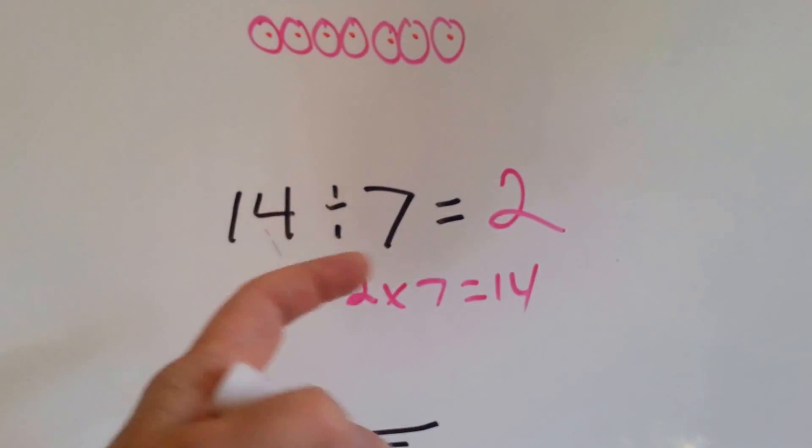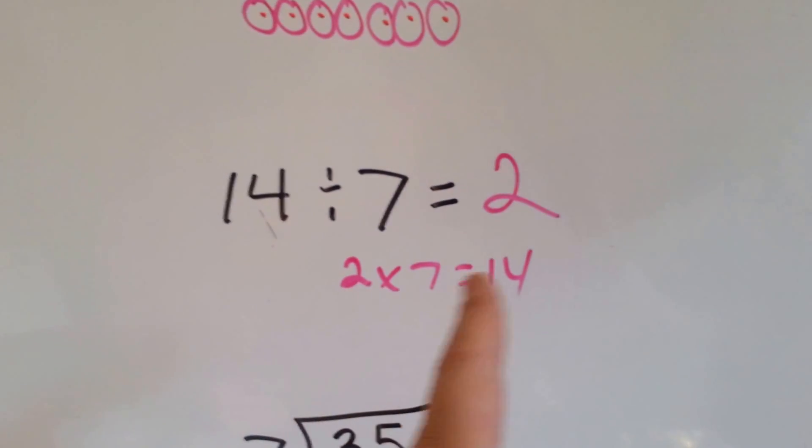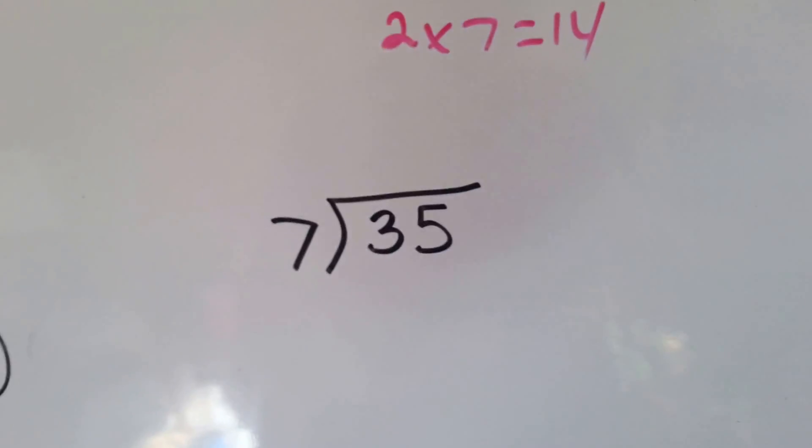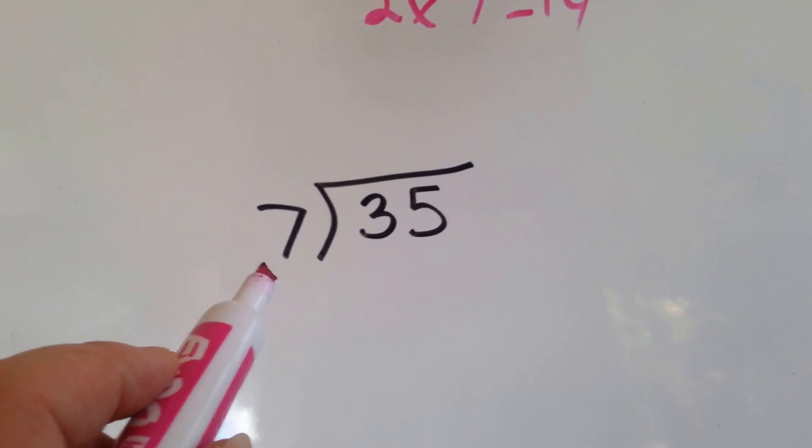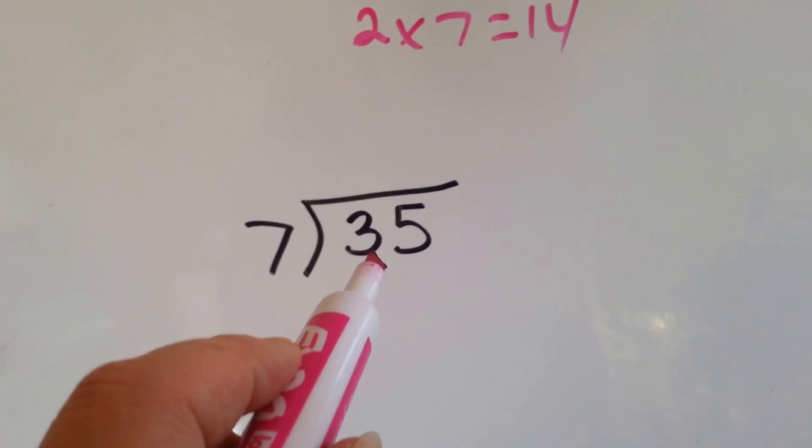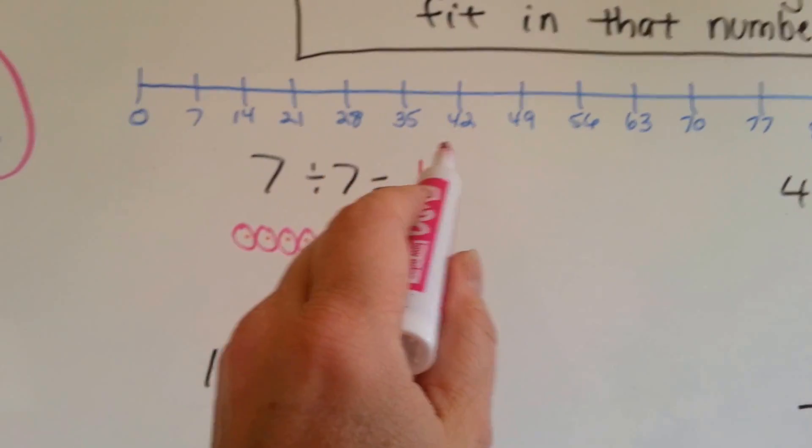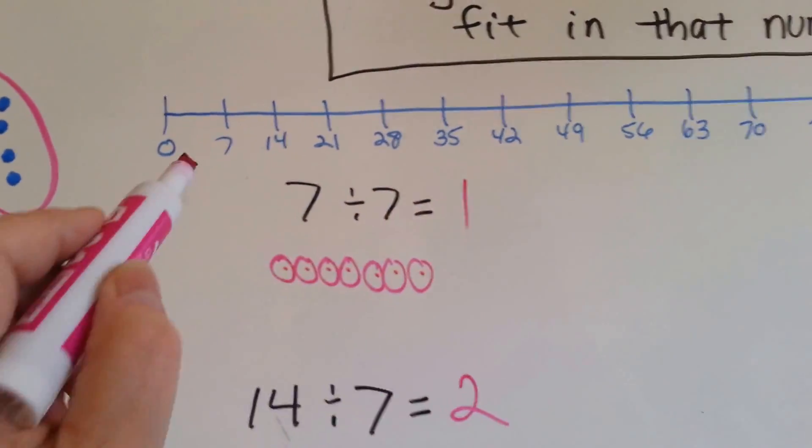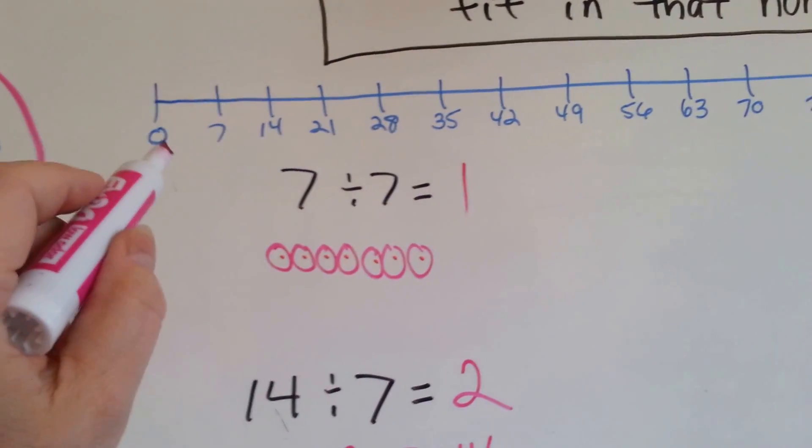See the inverse operation going the other direction? Multiplication is the inverse or the opposite of division. So, 14 divided by 7 equals 2 and 2 times 7 equals 14. Let's use the number line again. 7 goes into 35.